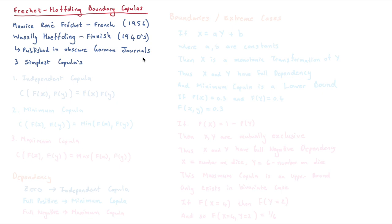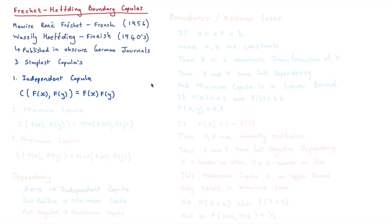Now in this video I want to talk about the three boundary copulas, also known as the simplest copulas. The one we've already come across specifically in the introduction video was the independent copula. This basically says if two probabilities have absolutely zero dependency — thus they are independent — we simply multiply the two together in order to create the joint distribution. This is something we should be very familiar with from first and second year statistics.